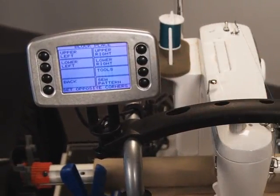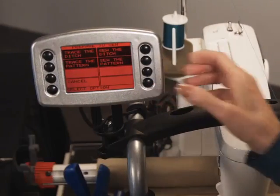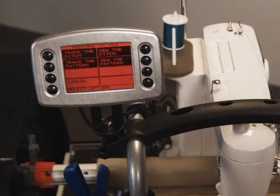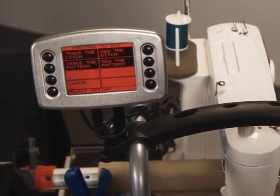Next select the sew pattern button. Your display now shows the prepare to sew screen with the screen highlighted in red. The red is a warning that the next button push will activate movement from your sewing machine. This screen is displayed every time you get ready to sew your pattern.